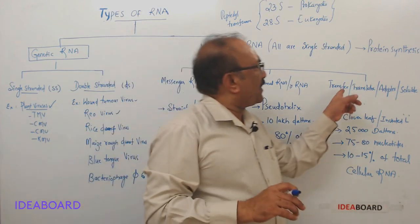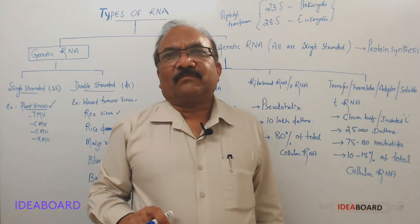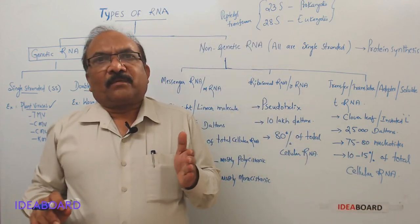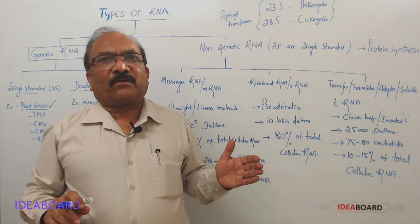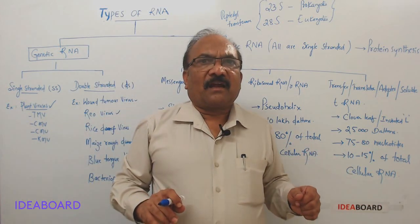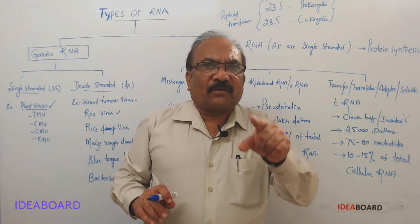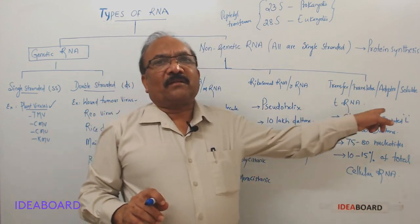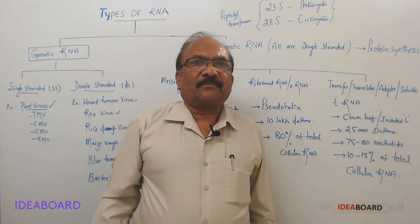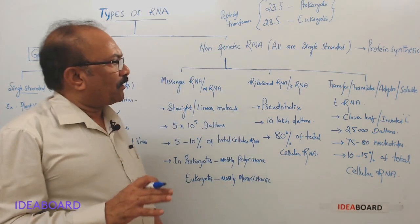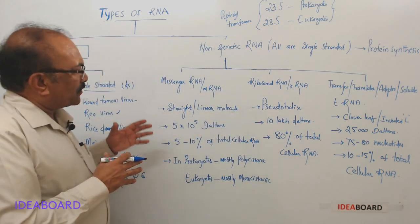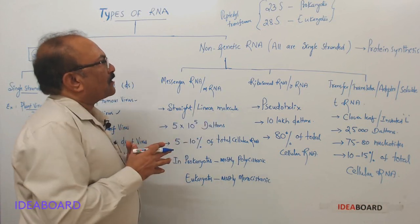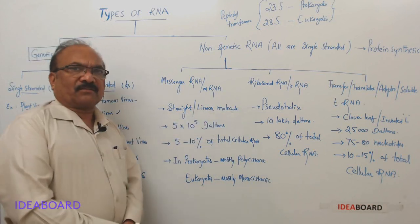Why is it called translator RNA? Because the genetic information brought by mRNA will be in the form of codons, and this coded information is decoded by tRNA. That is why it is also called translator RNA. We have to remember some important points about these three different types of non-genetic RNAs.